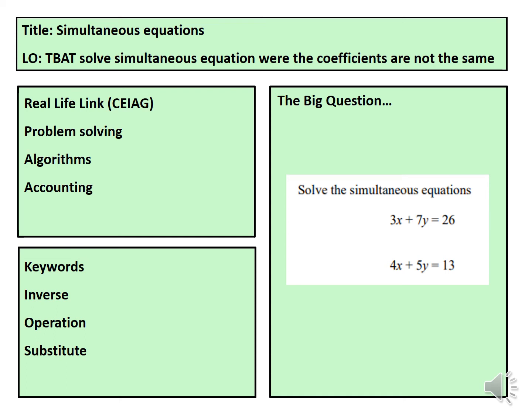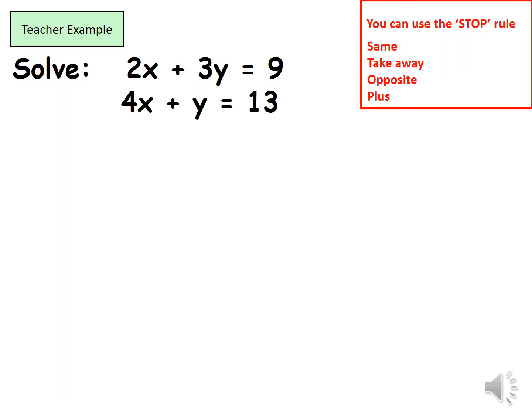Today we're looking at simultaneous equations — specifically how to solve them when the coefficients are not the same. To solve these pairs of simultaneous equations I'm going to use the elimination method. I'm going to either eliminate my x's or eliminate the y's. To use the elimination method, I need the coefficients of either the x's or the y's to be the same, but as you can see, the number in front of the x's isn't the same and the number in front of the y's isn't the same.